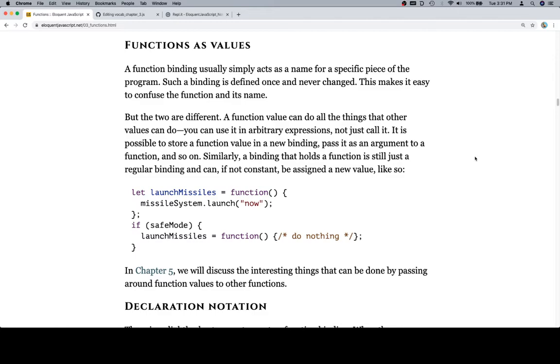Similarly, a binding that holds a function is still just a regular binding and can, if not constant, be assigned to a new value. That just means like the const. Remember we had the function earlier that was like const equals whatever the function was? That's what they mean by constant.